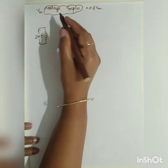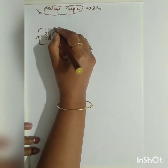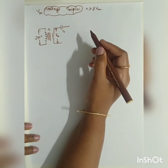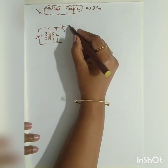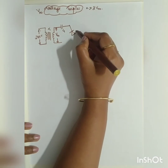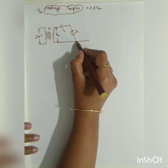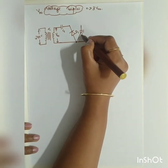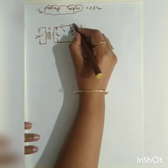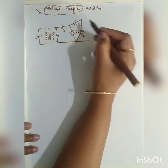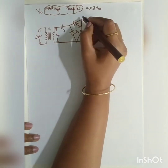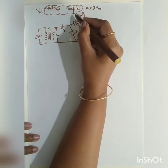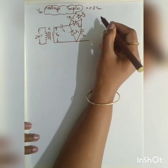The input is 240 volts connected to transformer T1, with the secondary maximum voltage equal to Vm. We have three pairs of diodes and capacitors. Diode D1 is connected with capacitor C2, then diode D2, then diode D3 connected with capacitor C3.